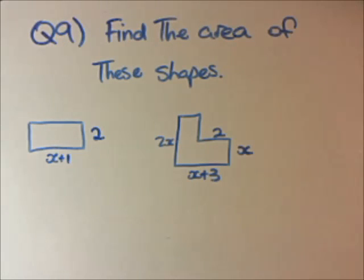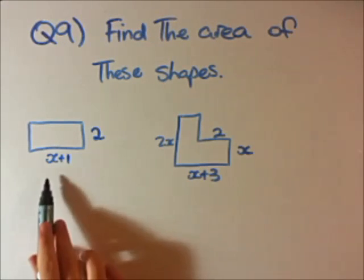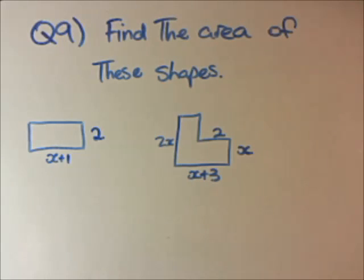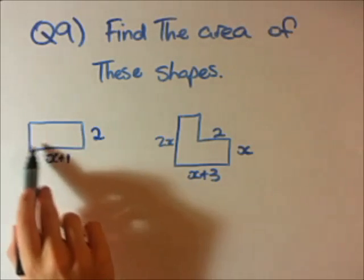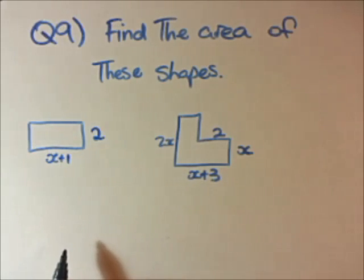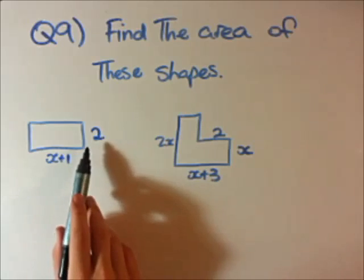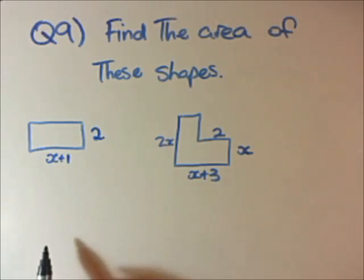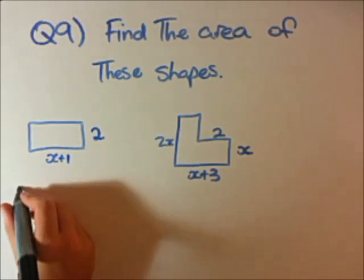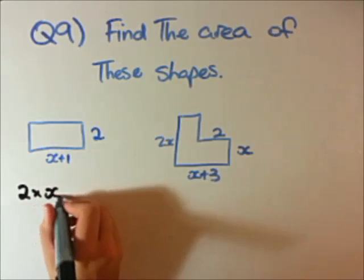Question 9. We are finding the area of these shapes, these two shapes here, using algebra. Because we might not have all of the required numbers to be able to get an exact or clear answer. So we're going to have to use some of our algebraic techniques from the earlier few questions. The first question here is a rectangle. To solve the area of a rectangle, it's just length times width. We can go 2 times x plus 1.